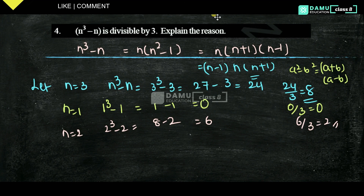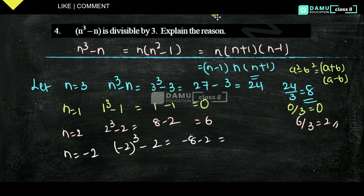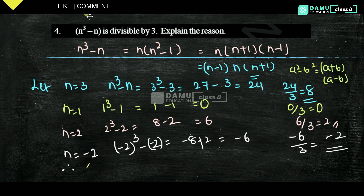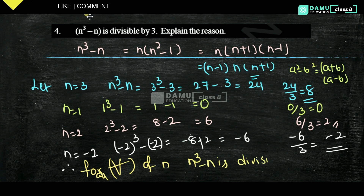For any value of n, it is divisible by 3. For example, n equals minus 2: (minus 2) cubed minus (minus 2) equals minus 8 plus 2 equals minus 6, and minus 6 divided by 3 equals minus 2 — yes, divisible. Therefore, for all values of n, n cubed minus n is divisible by 3, because it represents the product of 3 consecutive numbers, which is always divisible by 3.